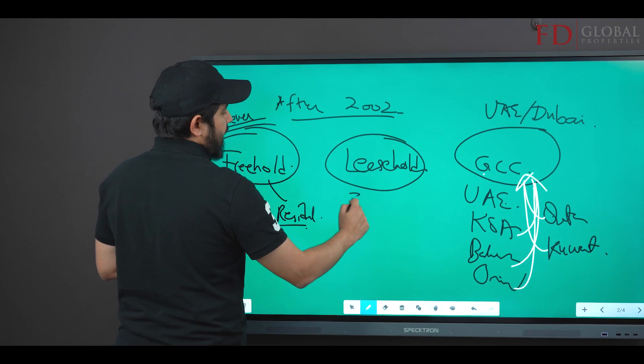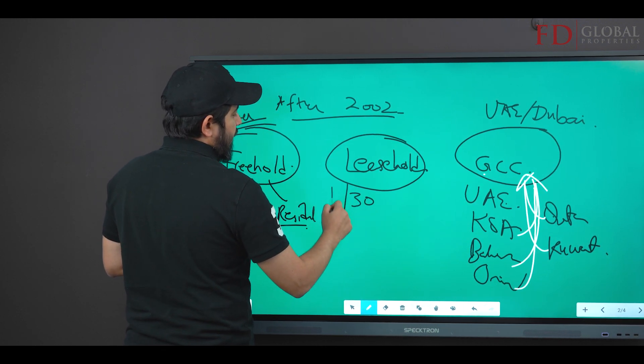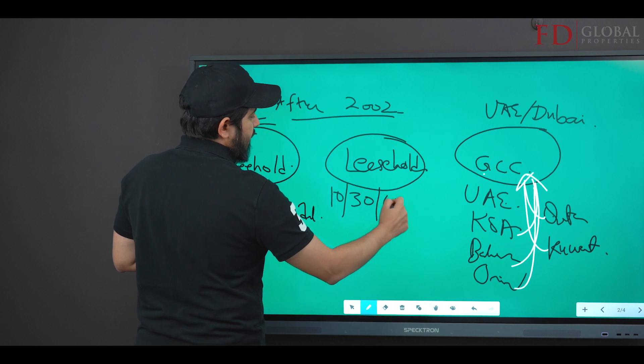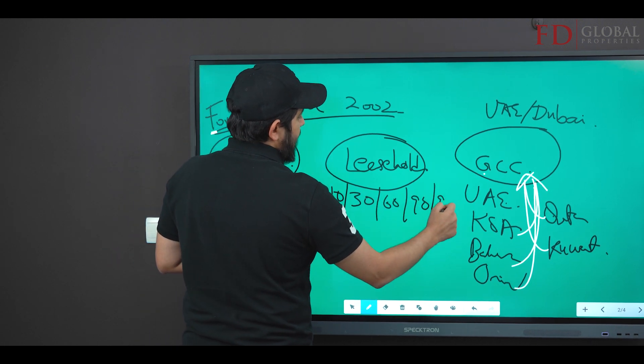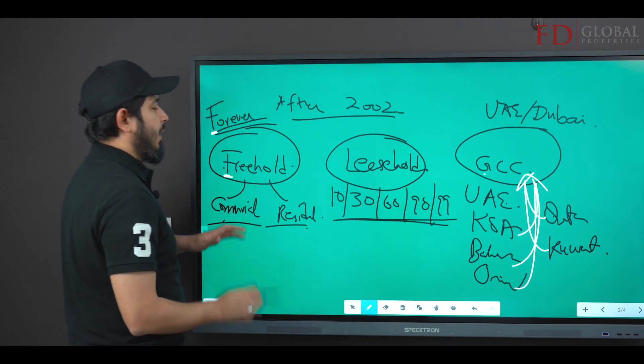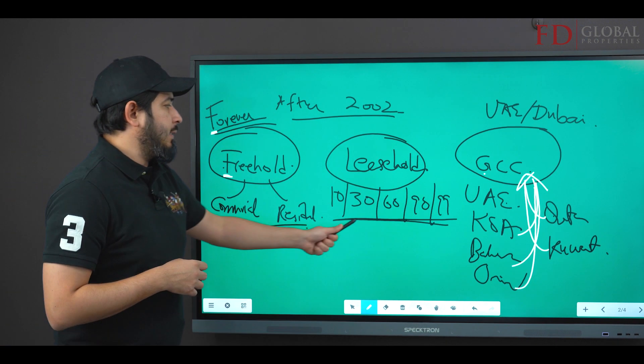Leasehold can vary, and again, anybody can buy in leasehold, but they can vary from 10 years, 30, 60, 90, 99 years. I haven't seen leases more than 100 years in Dubai at the moment.